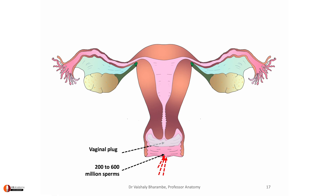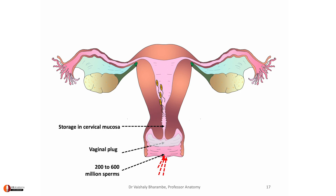Now, what do the sperms do? They begin to enter into the cervix, where they get stored in the cervical mucosa. Why are they being stored? They are released in batches — not all at once. It is a war strategy: sperms go in small batches towards the ampulla. Meanwhile, because of the coital reflex, the uterus contracts with the release of oxytocin, further helping the sperms move towards the ampulla.